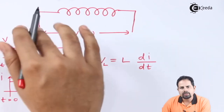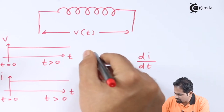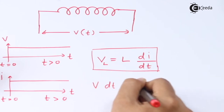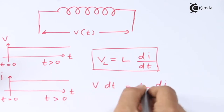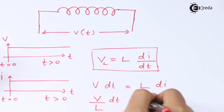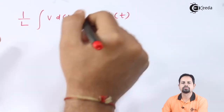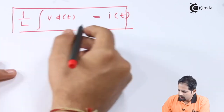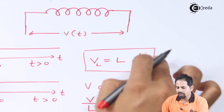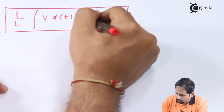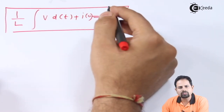Now what exactly happens? Suppose initially there is no voltage applied. From the formula VL equal to L di by dt, we will calculate I. So V dt becomes L di. If you integrate both sides, taking L over, it becomes V by L into dt equal to di. Integrating both sides we get 1 by L times the integral of V dt equal to I of t. There is also a constant of integration I of 0, which comes from the initial conditions.